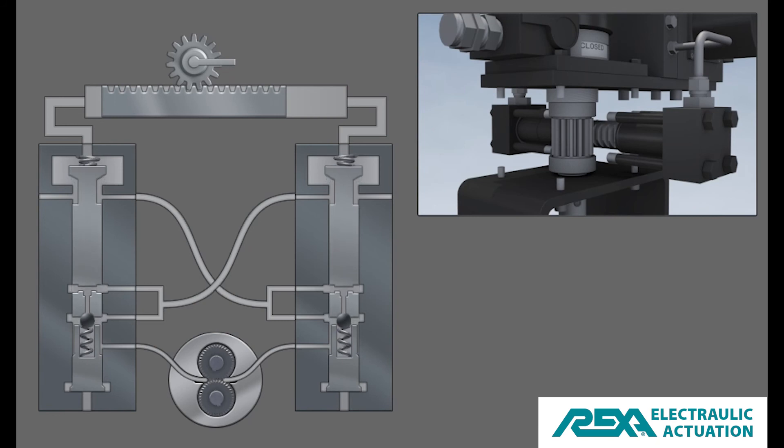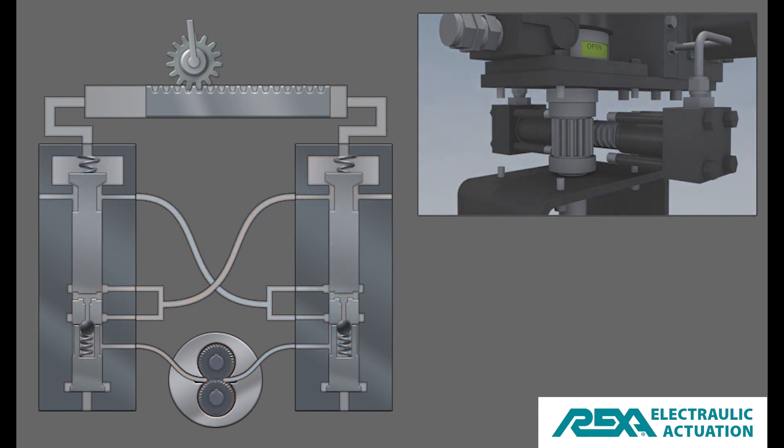If the valve was required to move in the other direction, the pump motor will start in the reverse direction, causing the flow circuit to reverse in the mirror image. The actuator will move the connected valve in the opposite direction. Once the valve reaches the desired position, the pump will stop, flow match valves will return to their normal position, and the valve actuator will be locked in its current position.